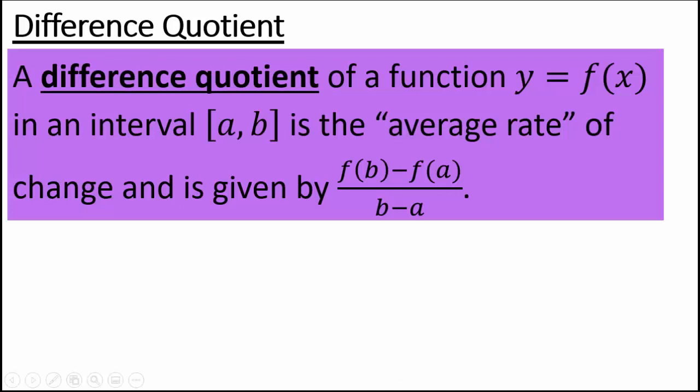The first concept is the difference quotient. A difference quotient of a function y equals f of x on an interval [a,b] is the average rate of change and is given by the difference of the y coordinates divided by difference of the x coordinates, f(b) minus f(a) over b minus a.